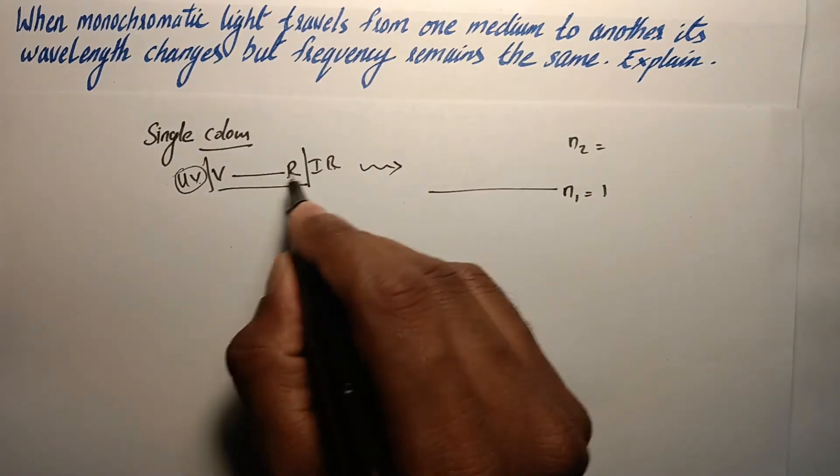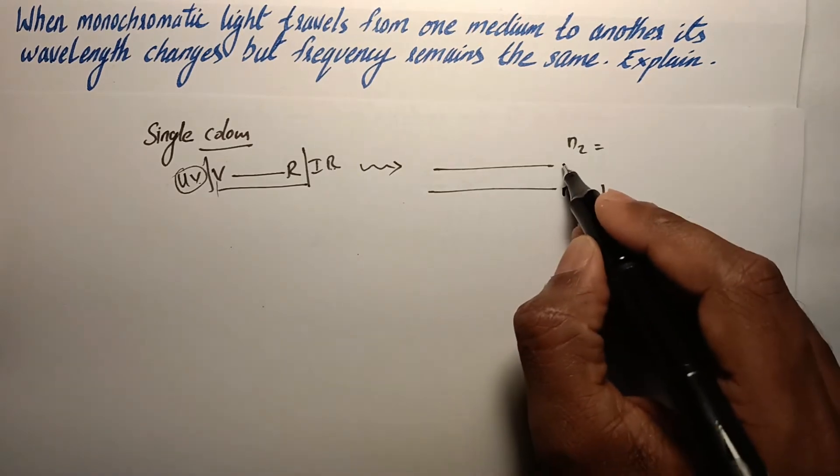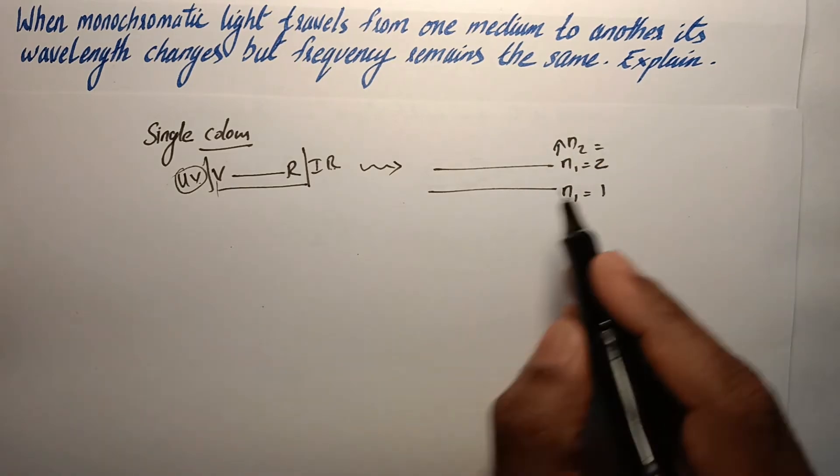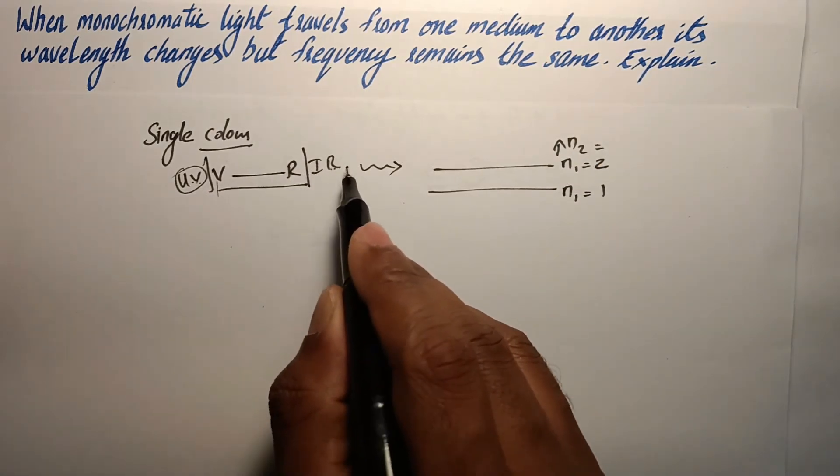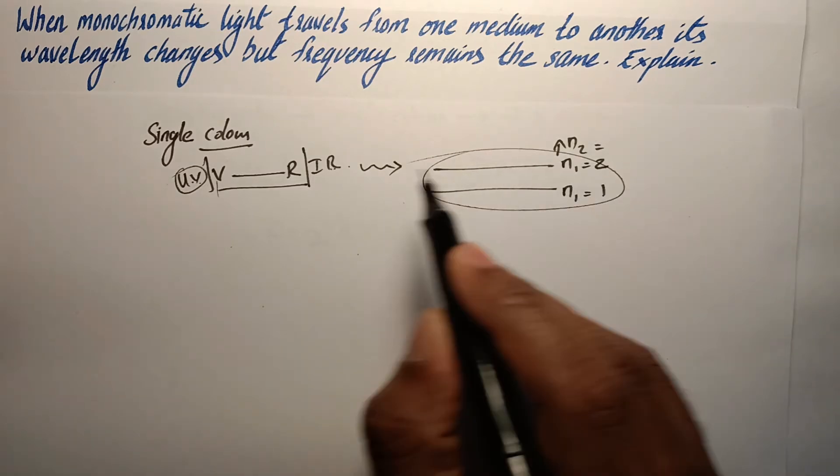And in case of visible light, the electron has to transit between n₁ equal to 2 to any other higher orbit. So each color is determined by the source or the condition at which the light is produced.